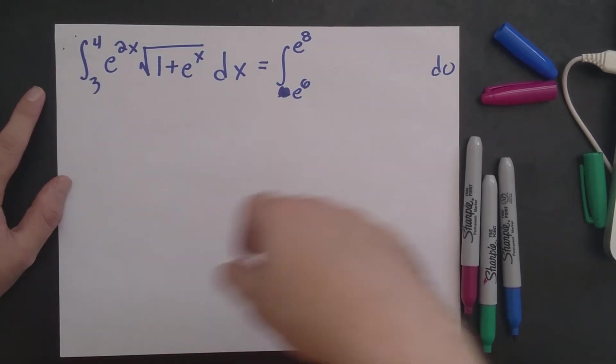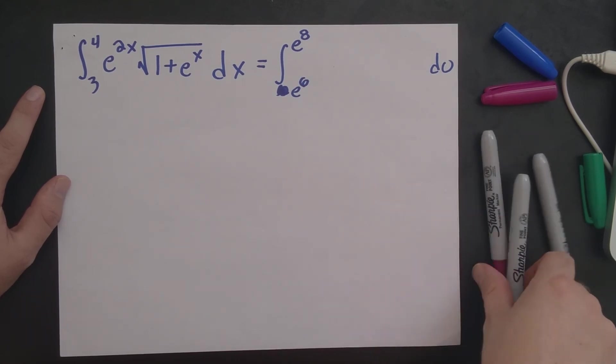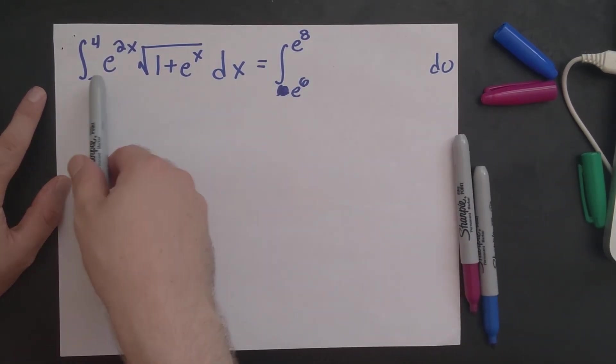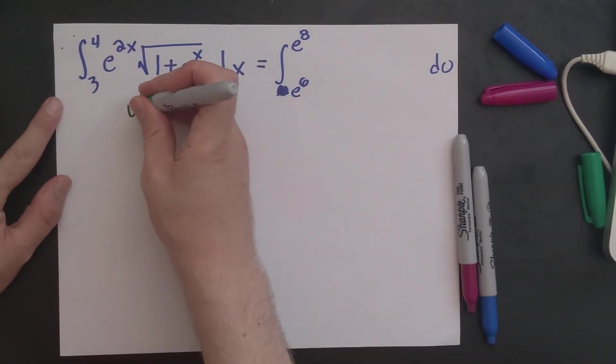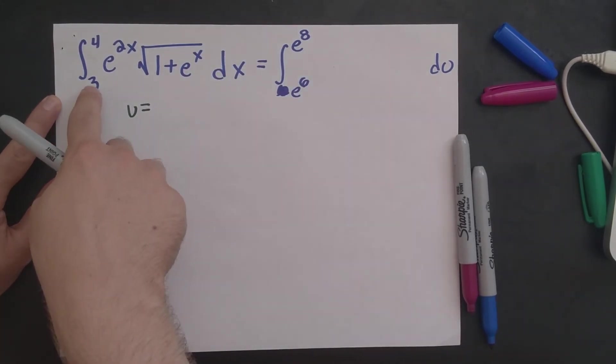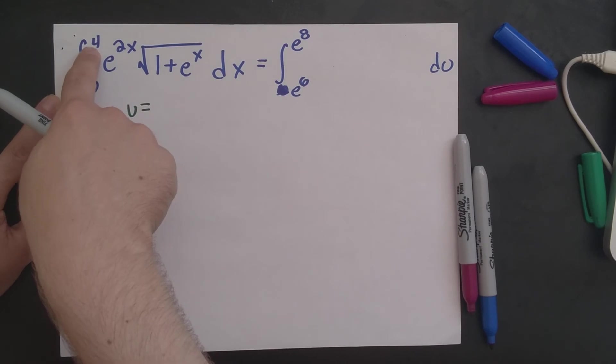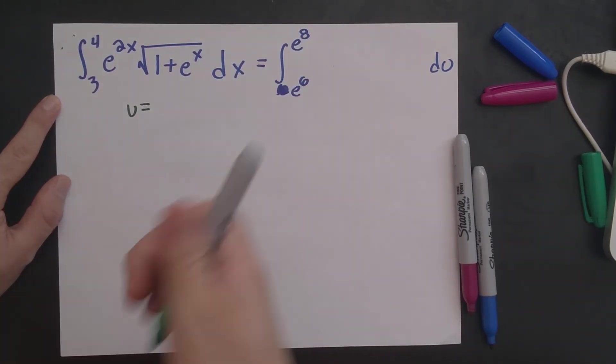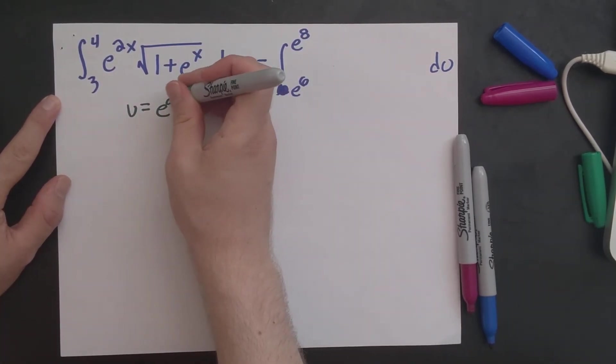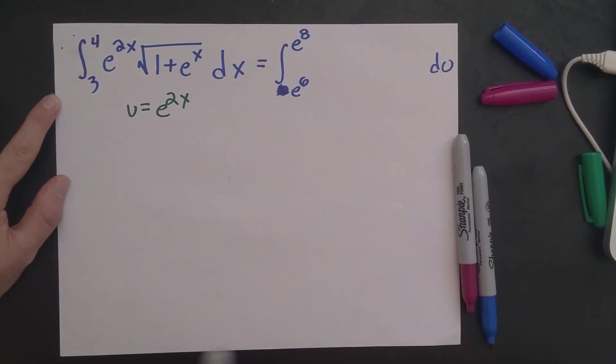But we don't really have the freedom to make those choices. Our hands are tied. We are forced to come up with a substitution, u, so that when x is 3, u is e to the 6. And when x is 4, u is e to the 8. And it's pretty easy to see that e to the 2x does that trick. u to the 2 times 3 is e to the 2 times 3 is e to the 6. e to the 2 times 4 is e to the 8. So that checks out.